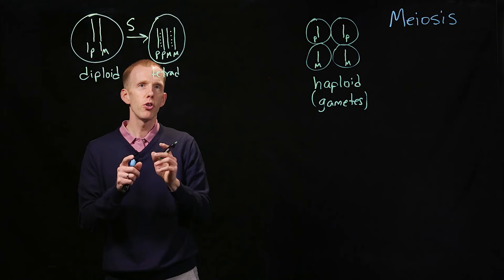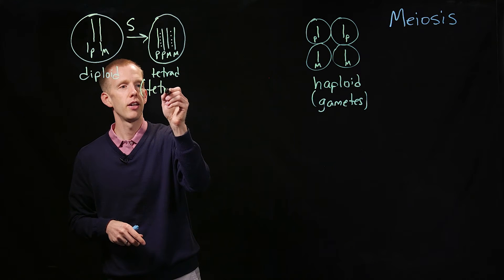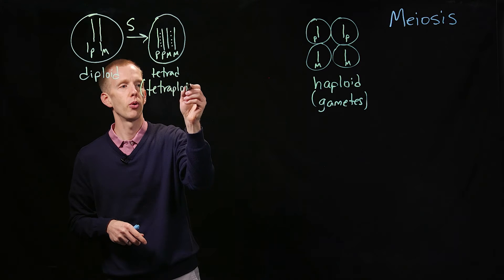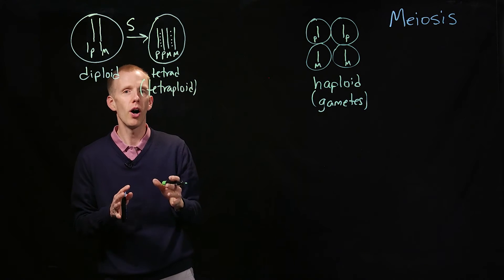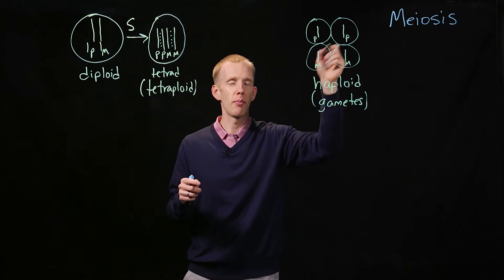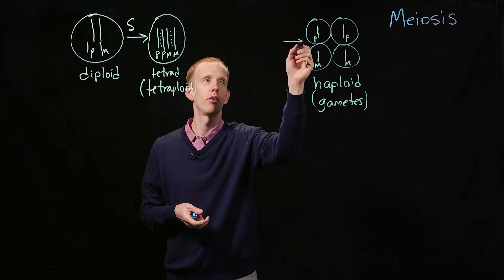So the first division, we're temporarily in a tetrad, we're temporarily in a state where the cell is tetraploid. It's got four copies of each chromosome, and of course that's what we want, because we need four copies of each chromosome to produce the four gametes that are a result of meiosis.